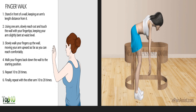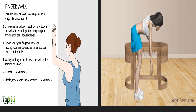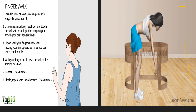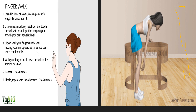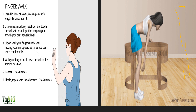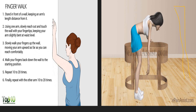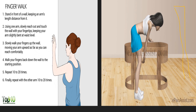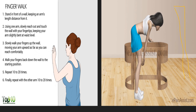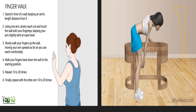Biofeedback, specifically mirror therapy, has shown immense success. For example, a mirror is placed in front of the patient, who performs movements like abduction or flexion with both the affected and unaffected hands. Seeing the reflection, the brain perceives the discrepancy and prompts the patient to improve movement on the affected side. This is how mirror therapy has been doing wonders in the treatment of frozen shoulder.